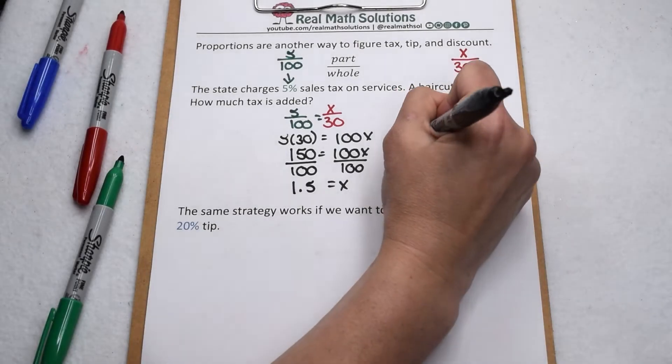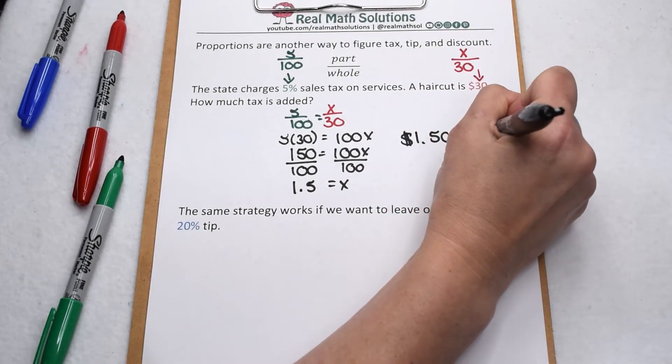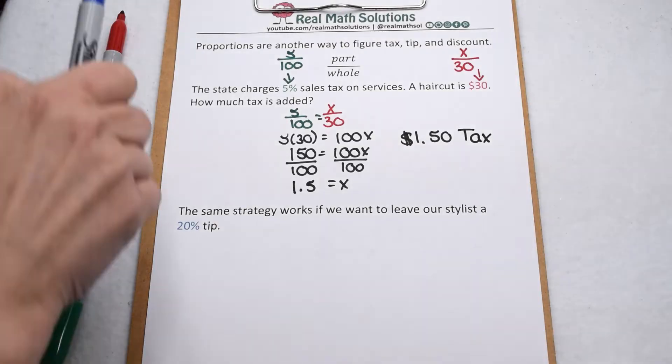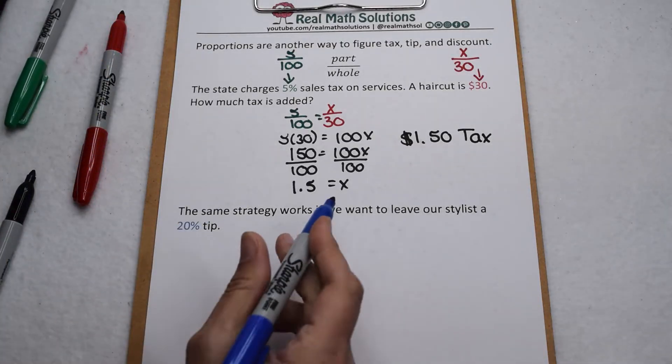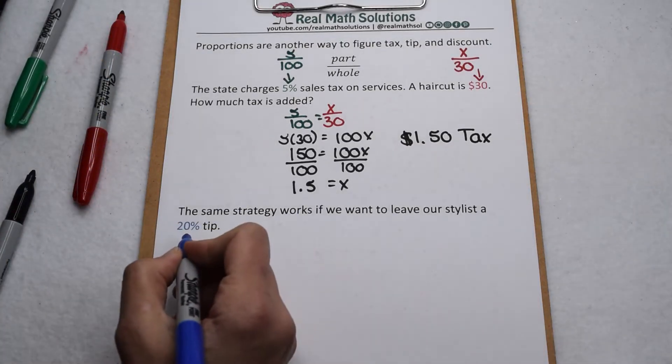Since we're talking about money, that means we're going to have to pay another $1.50 in sales tax. Now, that same strategy is going to work if we want to leave our stylist a 20% tip.